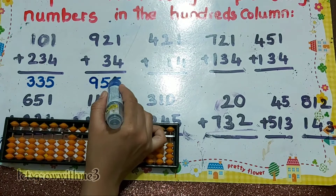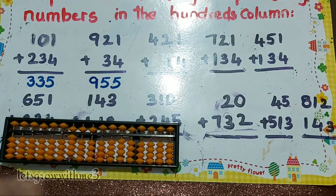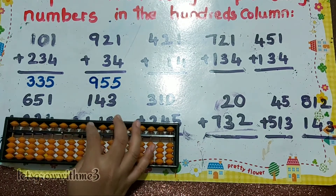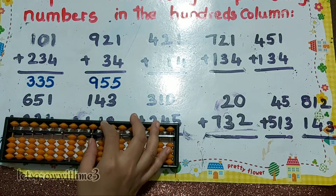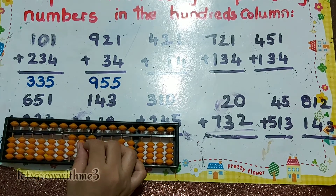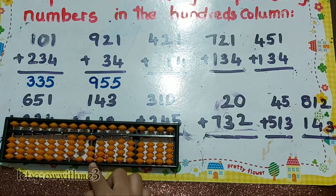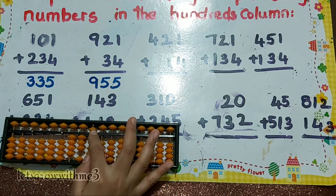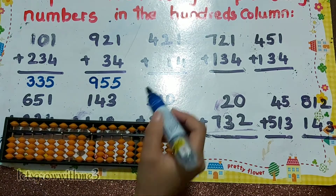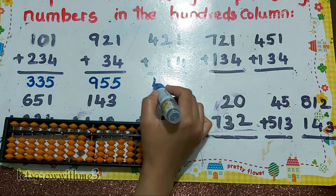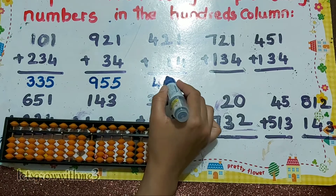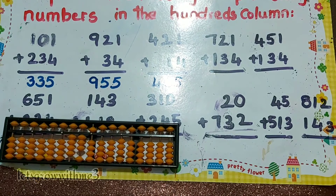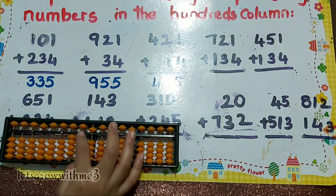Nine five five, okay. Next one: 421 plus 14. How to add: 4 — plus 5 plus 5 minus 1. So our answer is 435, okay.